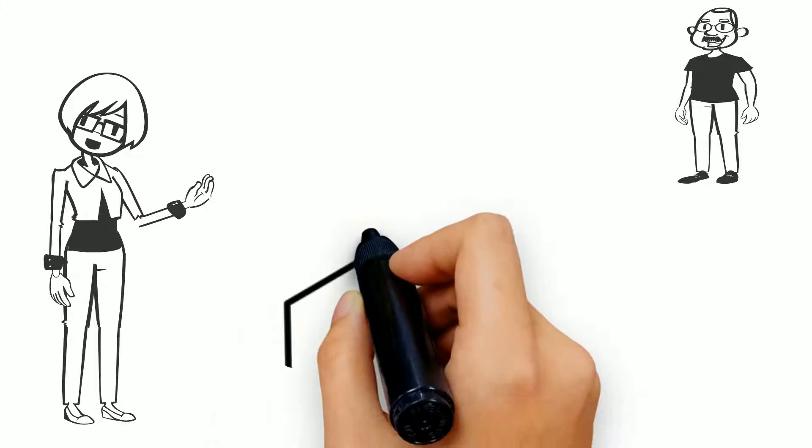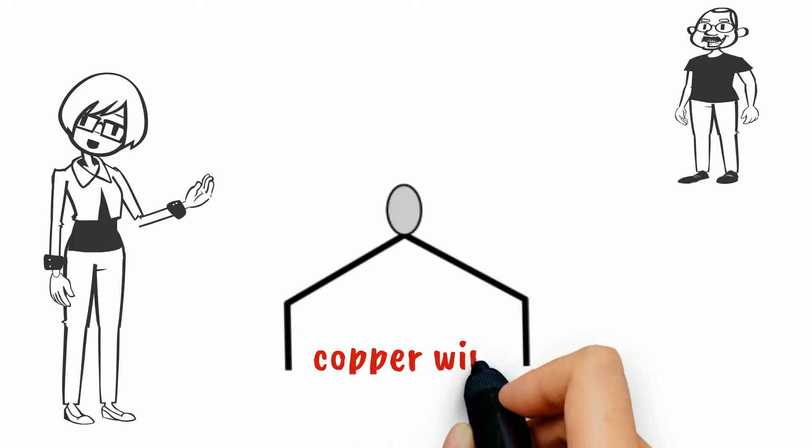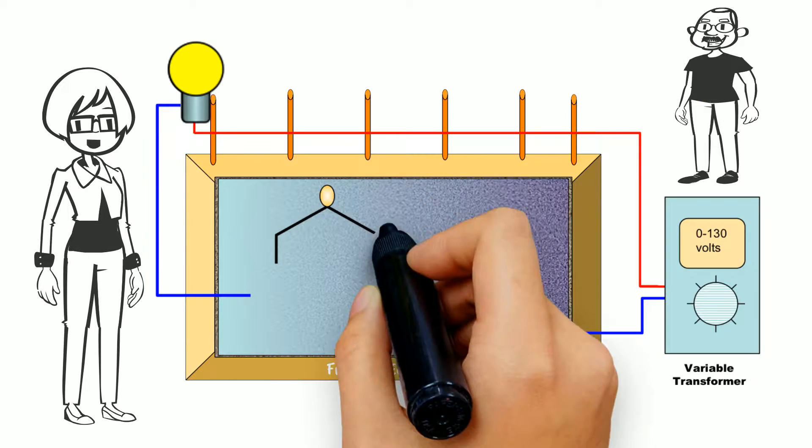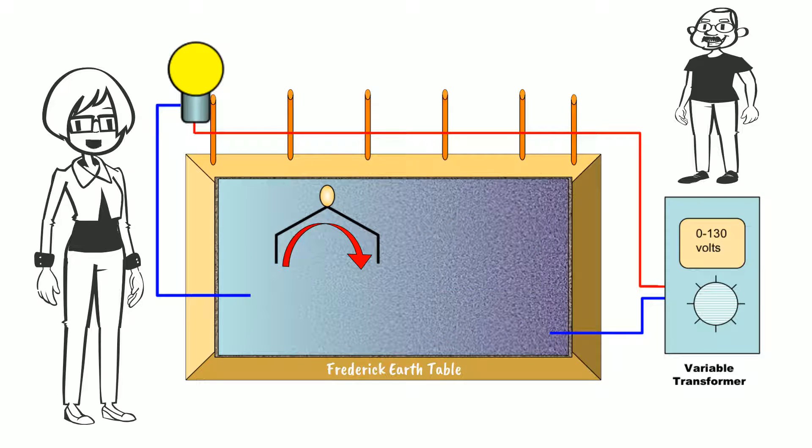Ralph did something intriguing. He took copper wire and fashioned it into a person with two legs and connected an LED bulb for the head. When Ralph placed the figure in the soil, its head lit up. This means there is a current flowing through the wire figure, enough of a current to light the bulb.